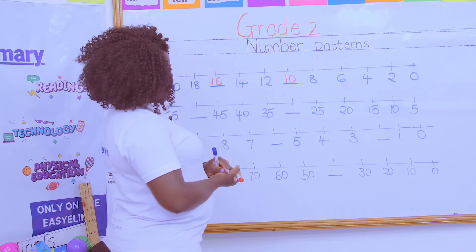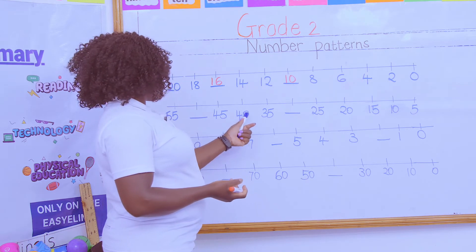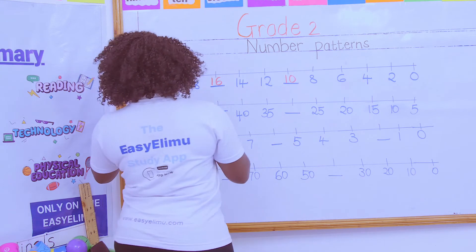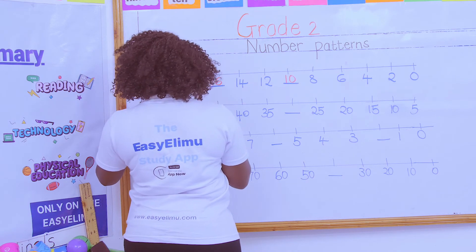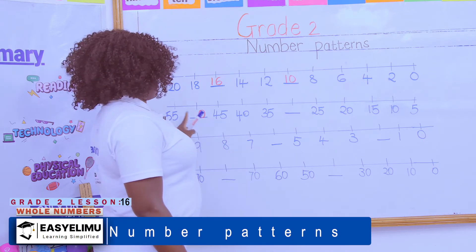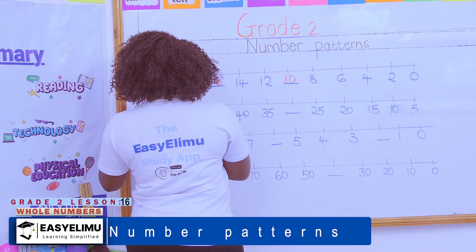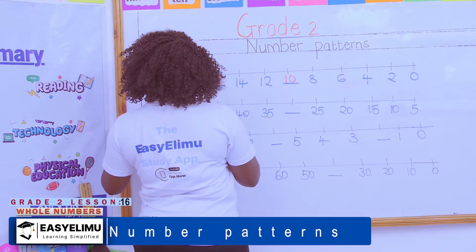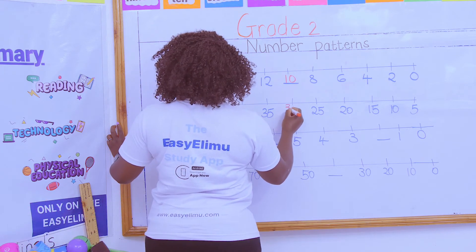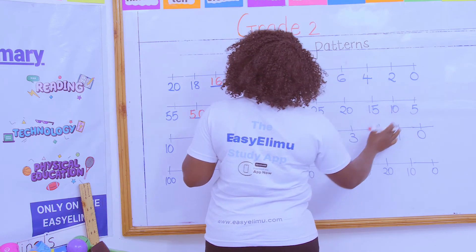What are we counting in? Teacher, we are counting in fives. Why? Because the numbers have a five and a zero. So if this one has a five, the number after it will have a zero. This is 45 and this is 55, so which is the number with a zero between 45 and 55? Teacher, it is 50. Very good. So we are saying: 55, 50, 45, 40, 35, 30, 25, 20, 15, 10, and 5.